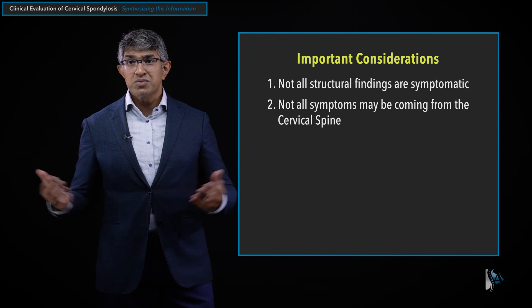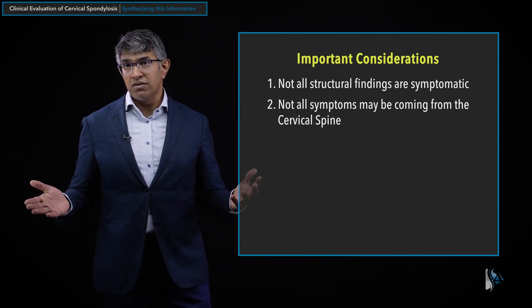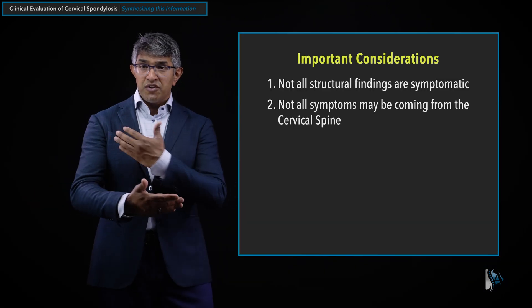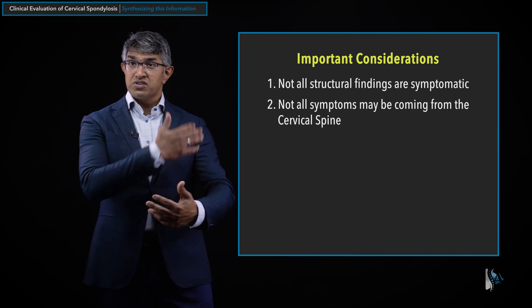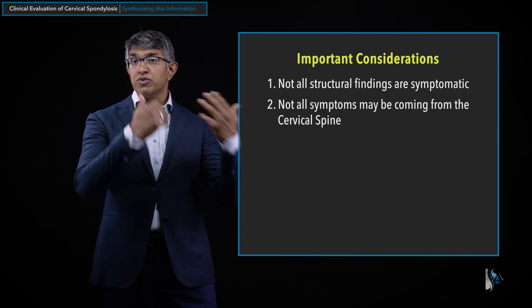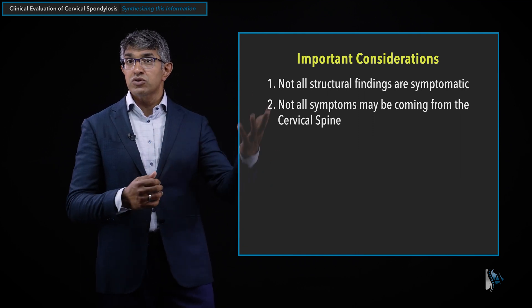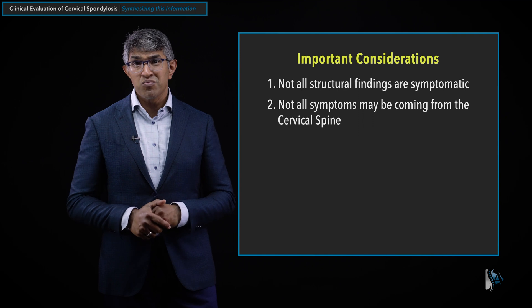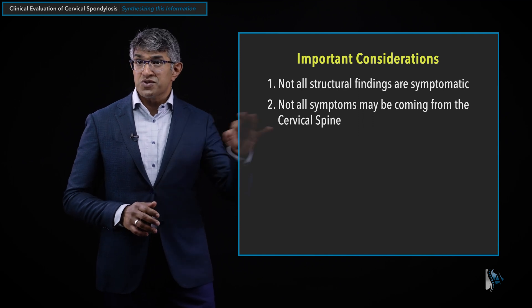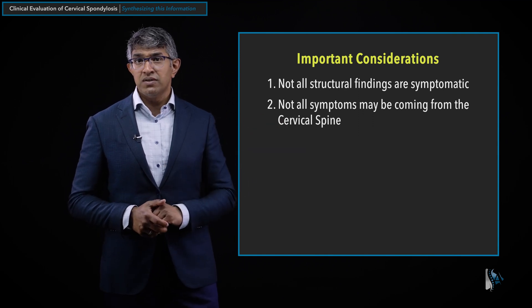Number two: people can have symptoms that are not coming from the cervical spine. There are many things that can cause pain in the neck, pain and symptoms into the arms, numbness, and similar complaints. Having a broad differential diagnosis and doing a detailed exam that may point to the shoulder, a peripheral nerve problem, thoracic outlet syndrome, or something else is important — not all symptoms have to be coming from the cervical spine.